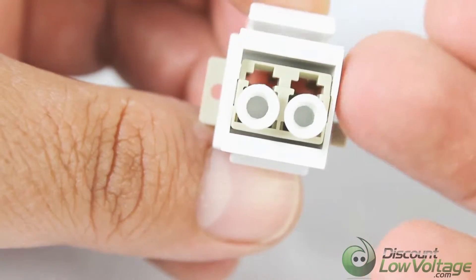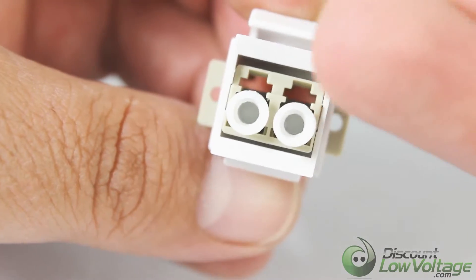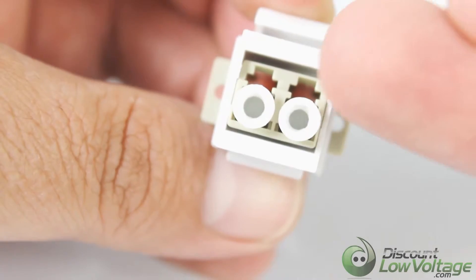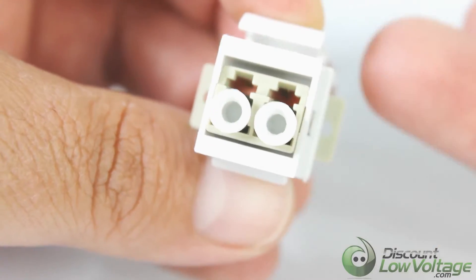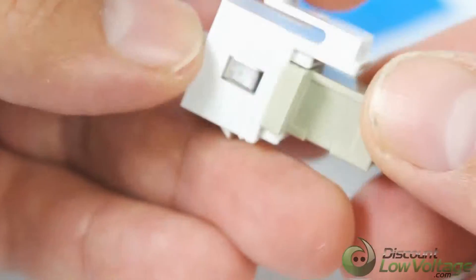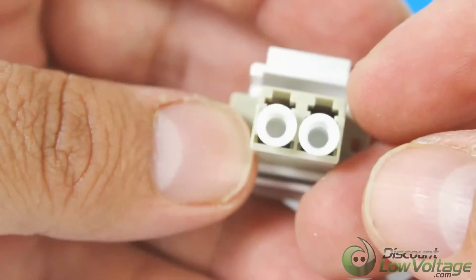As you can tell, the LC footprint is smaller than the SC, so you'll be able to get two strands into one port instead of the SC, which will just take up another port. Not a big deal, but maybe you're in a space where space is limited. So that's basically it.